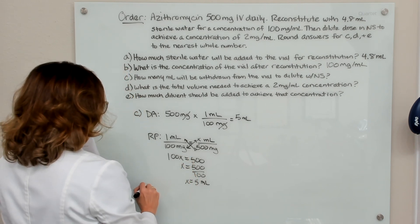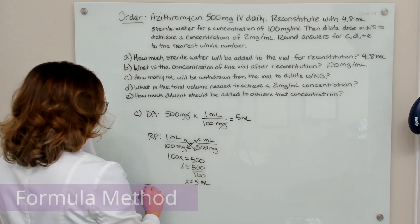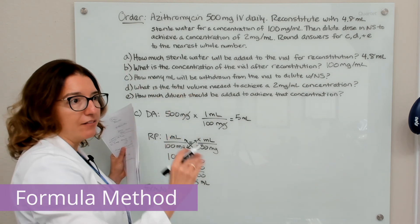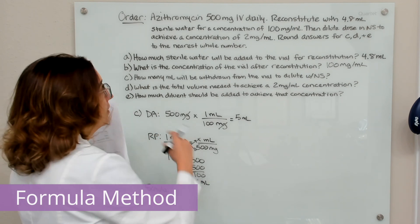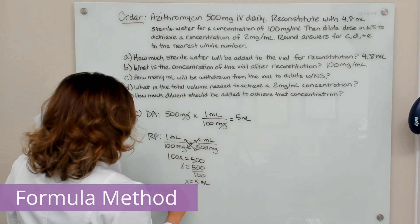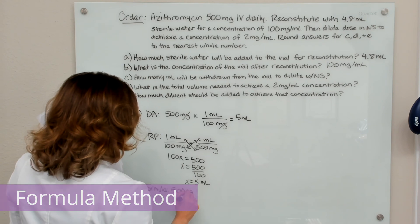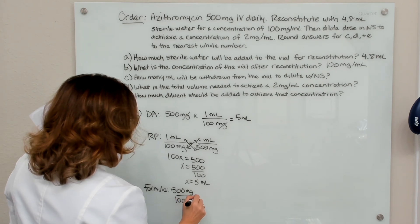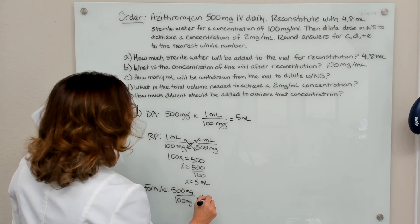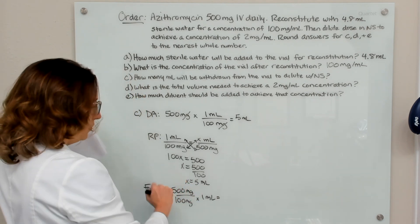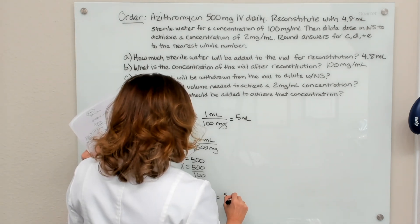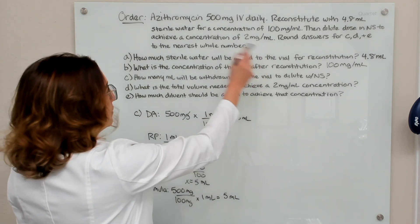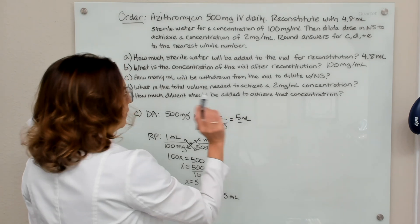We can also do the formula method. So if you recall, the formula method has desired over have times the vehicle. So our desired dose is our ordered dose. So that's 500 milligrams over 100 milligrams. And what we have is 100 milligrams in one ml of solution. So we do this math. Again, we end up with five mls. So that's what we are pulling out of the vial. And it says round to the nearest whole number. We're already there. So we're good to go on rounding.